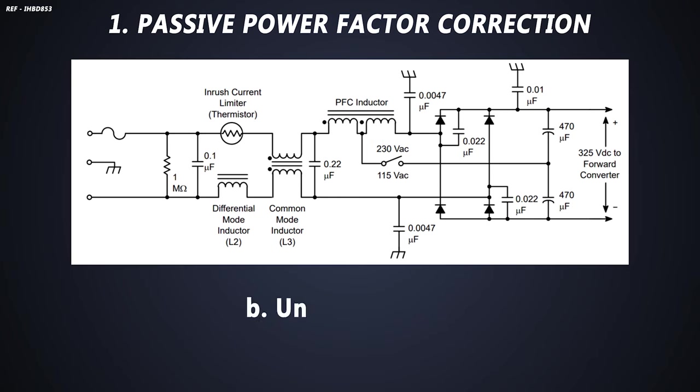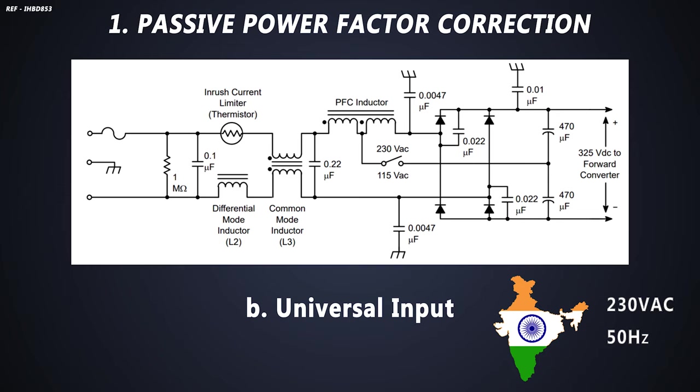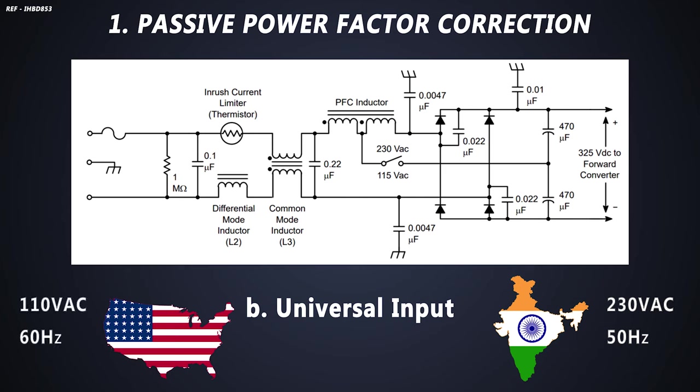All over the world, the voltage supplied by the grid is not the same. For example, in India, it is 230V AC with a frequency of 50 Hz. And in US or Canada, it is 110V with a frequency of 60 Hz. So, we cannot use the same inductors in both countries. For that, we have to add a switch for universal usage.